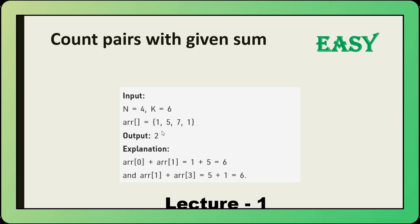Let's try to understand it. We have 1, 5, 7, 1 here. 1 plus 5 is 6, which satisfies K — that means the count is 1. Again 5 plus 1 is also 6, it satisfies one more condition, then the count is going to be 2. So we need to return the output as 2. That's all the problem statement. Let's go to the diagram to understand in a much better way.